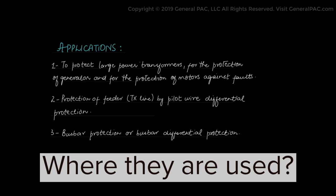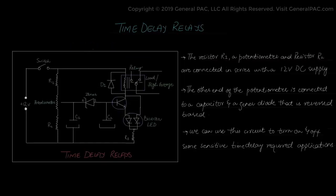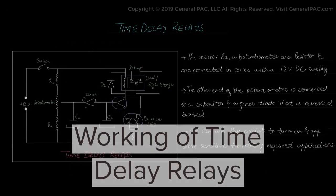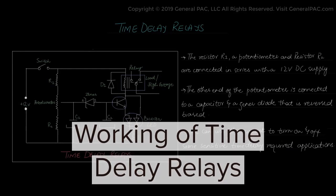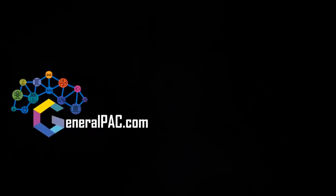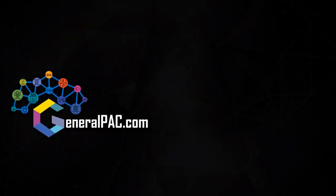The next type of relay is connected to a capacitor and a zener diode that is reverse biased. We can use this circuit to turn on or turn off some sensitive time delay required electrical application.